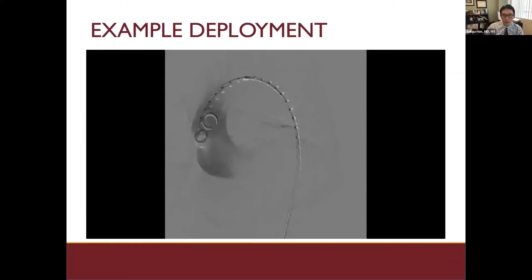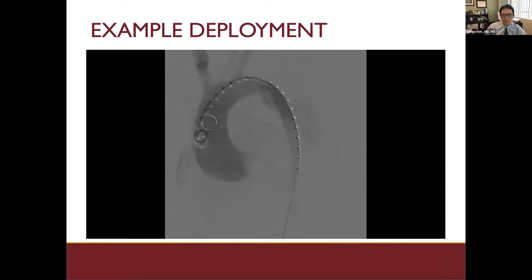I wanted to share an example of our routine in active control deployment at USC. This was a Zone 2 T-bar for type B aortic dissection, and carotid subclavian bypass was already done. I'll walk you through this.